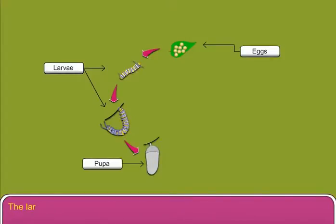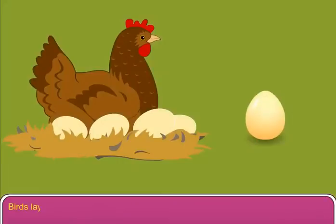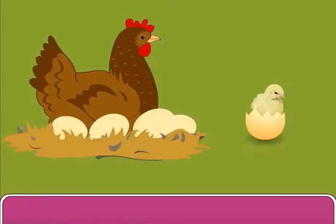The larva changes into pupa. From pupa, the adult insect is formed. Birds lay eggs in their nests. The baby birds that hatch look exactly like their parents.